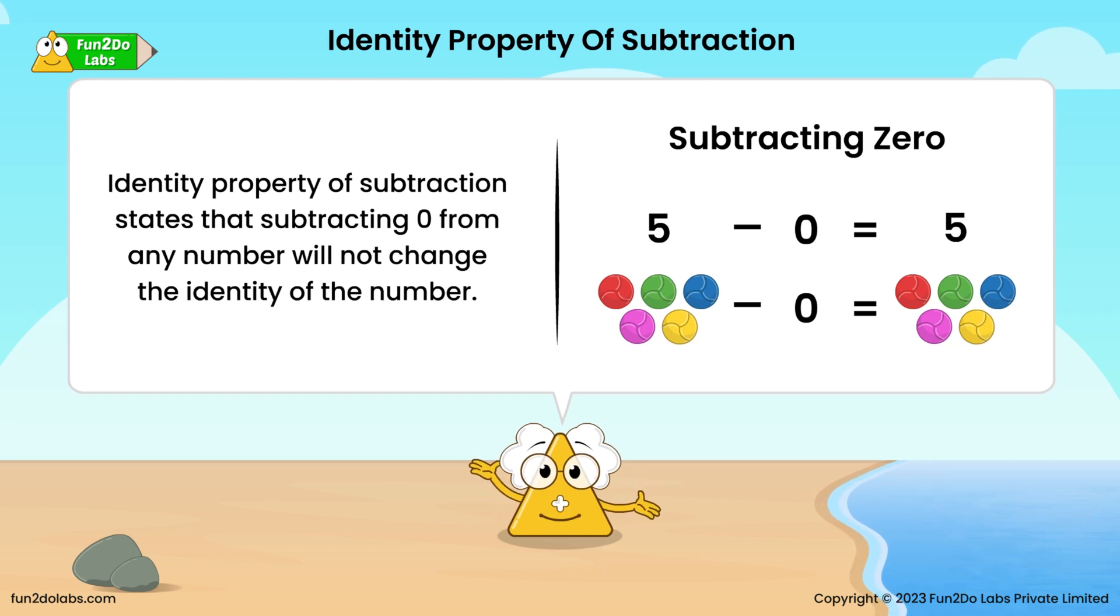Taking away zero from any number will not change its identity. So, five minus zero equals five. Isn't it so simple? No fear when I'm here.